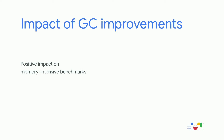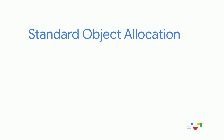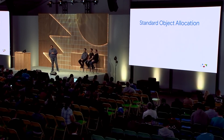In terms of the overall benchmark score impact of both GC improvements, for H2 the score improved by more than 15% for both ARM and ARM64, and for Sheets it improved by more than 5%.